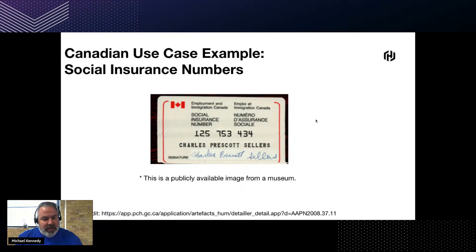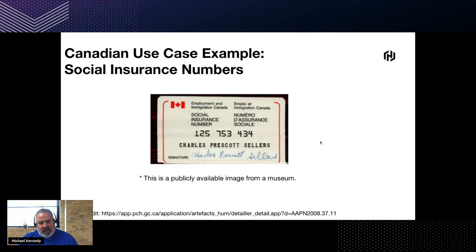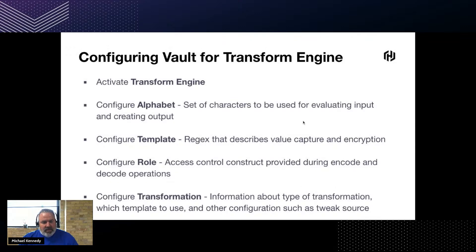Because this is HashiTalks Canada, I picked the Canadian use case: the Social Insurance Number. This is a publicly available image from a museum, so no worries — I'm not showing anyone's real SIN. The idea is that we have a nine-digit number that we all want to protect and don't want to leak for fear of identity theft. What we might do is use the HashiCorp Vault Transform engine to protect it as someone submits it to an API — have it transformed before it goes to the API producer and is written into a database or perhaps logged.